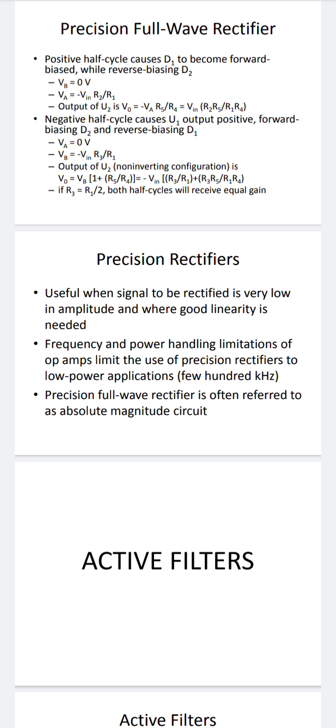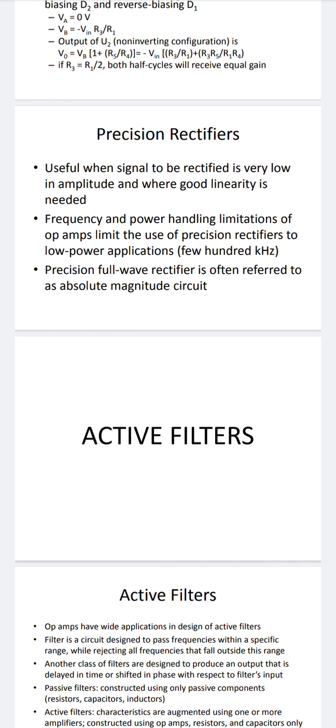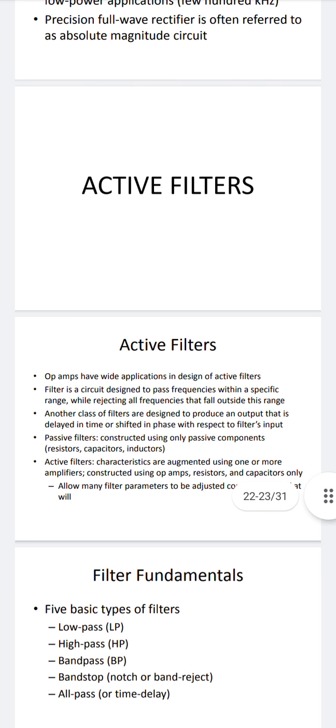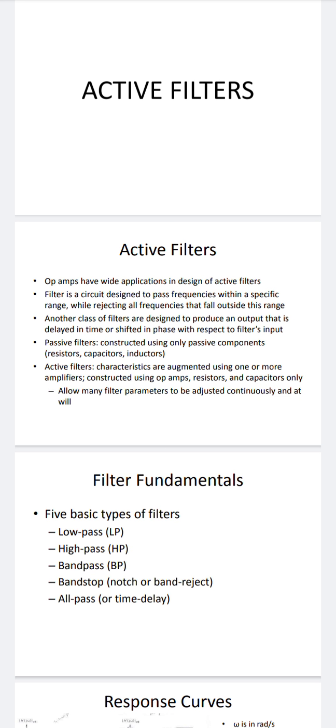Precision rectifiers are used for very low amplitude signals requiring good linearity. The frequency and power handling capacity is a limitation of op-amps in precision rectifiers, which are suited for low power applications at a few hundred kilohertz. The precision full-wave rectifier is often referred to as an absolute magnitude circuit.